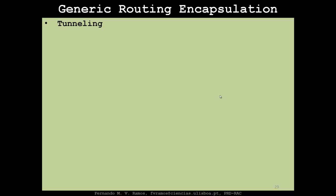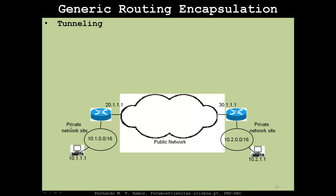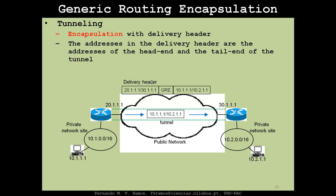Tunneling allows communication between two private network sites over a public network. You set up a tunnel between the border routers of your network. Since private addresses like 10.x don't exist in the public network, you encapsulate the packet — for example using GRE — and add a delivery header with the public addresses of the tunnel endpoints, such as 20.111 to 30.111.